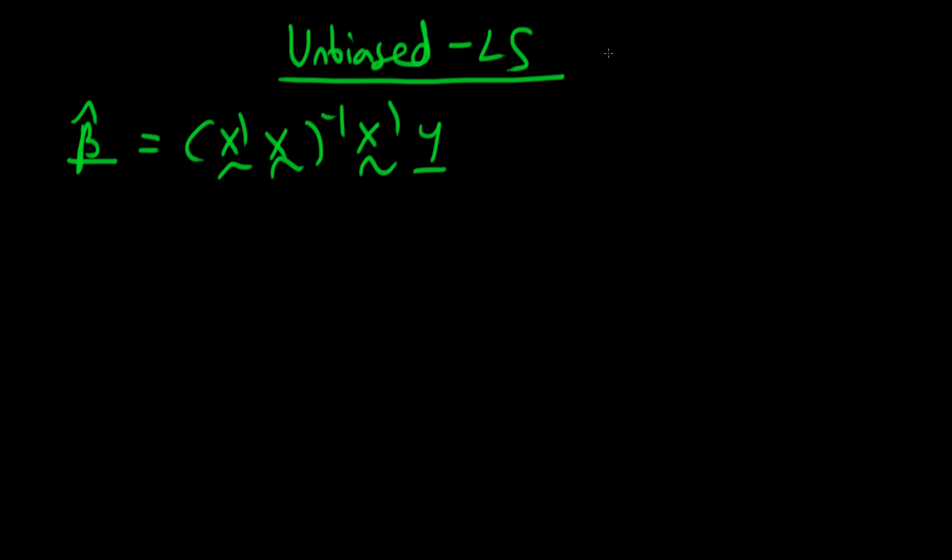And we said that in the population we suppose that there is some sort of population process which determines our vector of y and that's just equal to our matrix of independent variables times the true population beta plus some population error u.